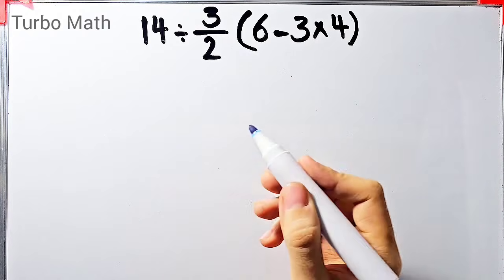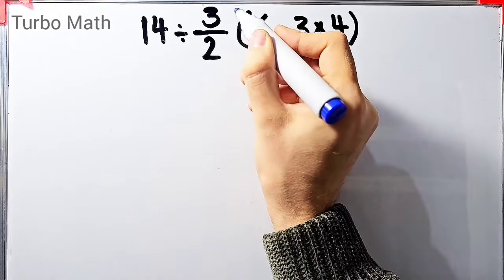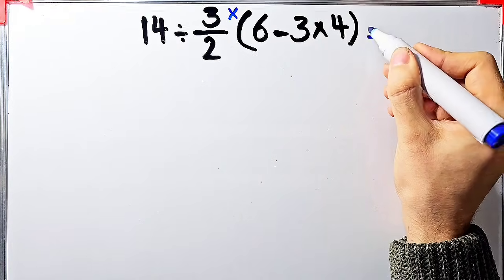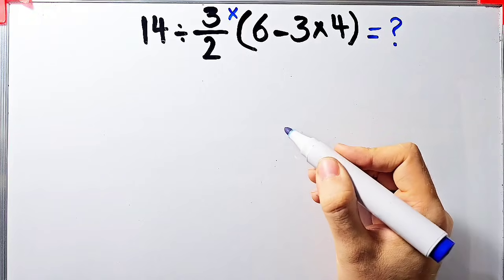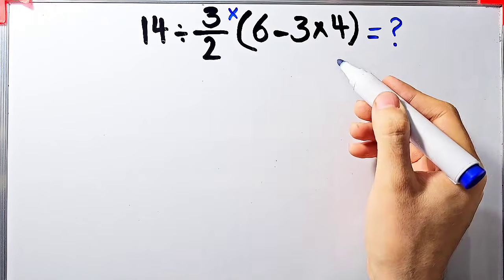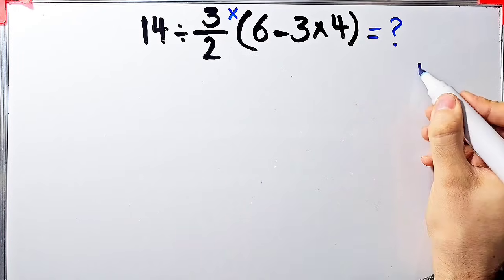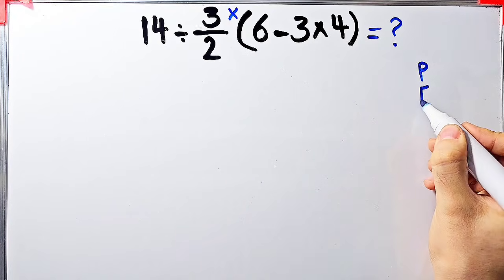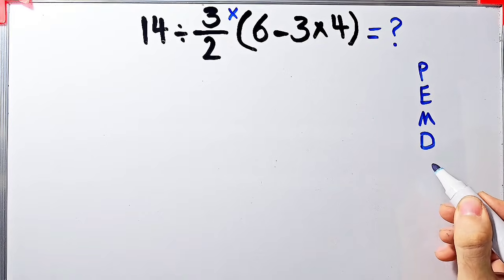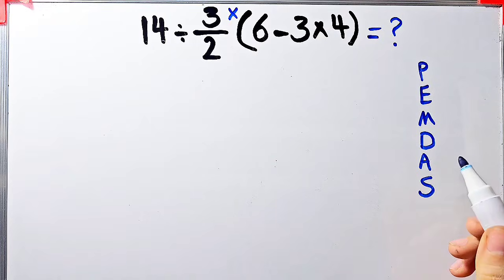The first question is 14 divided by 3 over 2, then times open parentheses 6 minus 3 times 4 close parentheses. What is the answer of this question? Can you solve it? In this question, we have division, multiplication, parentheses, and subtraction. To solve this question, we need to follow the order of operations, which is PEMDAS. If you don't pay attention to this rule, you get the wrong answer.